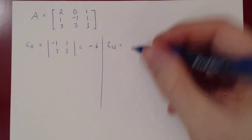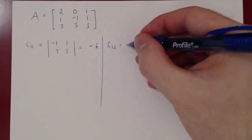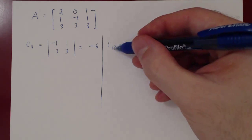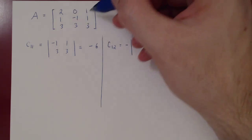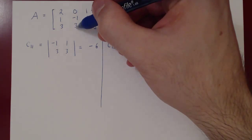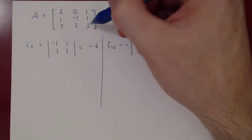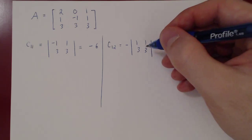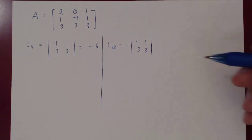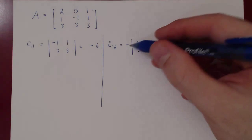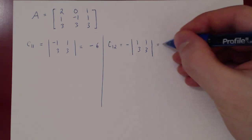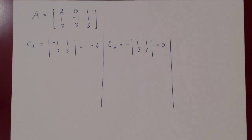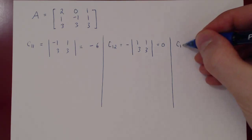C12: here we will have a negative sign times the determinant of the 2 by 2 matrix after deleting the first row, second column, and you get the matrix 1, 1, 3, 3. The determinant here will be 3 minus 3, which is 0, and negative of 0 is just 0. So C12 equals 0.